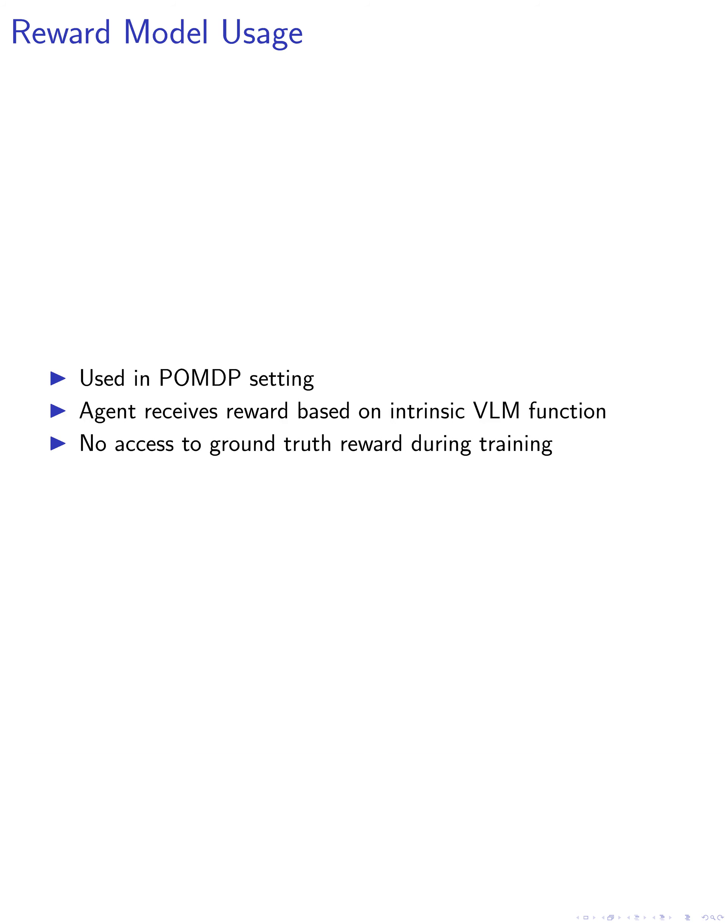The reward model, which consists of the image encoder and text encoder, is used in a POMDP setting. The agent receives observations, takes actions, and observes the next state according to the environment dynamics, receiving a reward based on the intrinsic VLM reward function. The episode terminates either on timeout or when the reward indicates the goal has been achieved. Importantly, we assume no access to the ground truth reward during training and only use it for evaluation purposes.